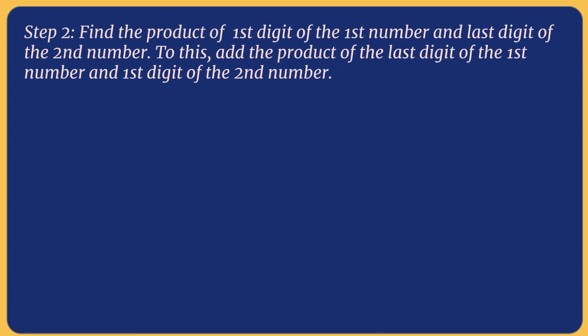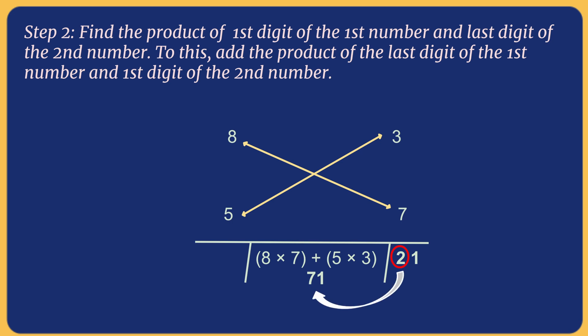Now time for criss-cross. So 8 x 7 gives us 56 and 3 x 5 gives us 15. Adding both 15 and 56 gives us 71. Since only one digit can be placed in the units place, 2 is added as a carryover to 71 giving 73.